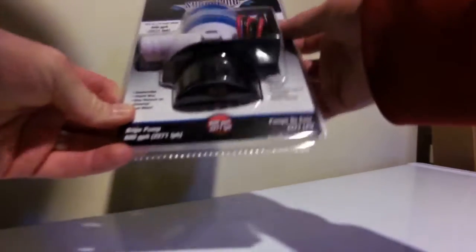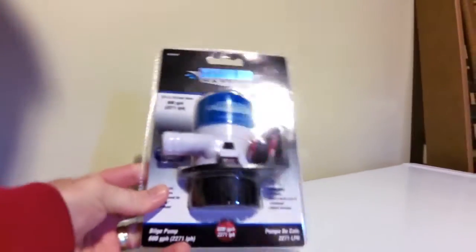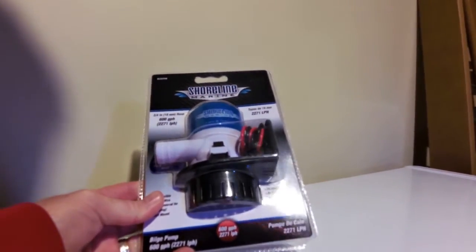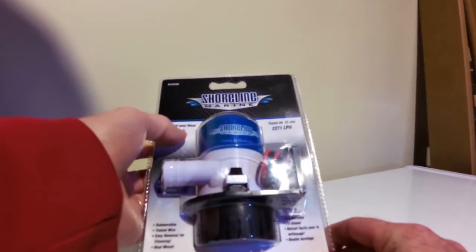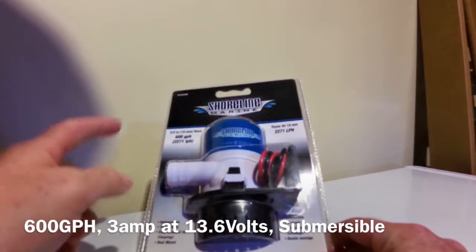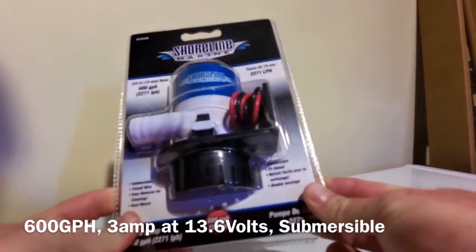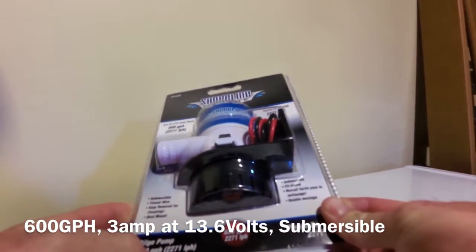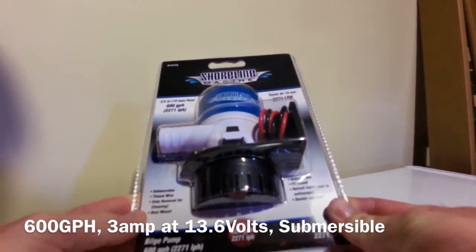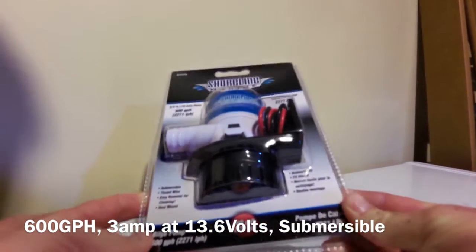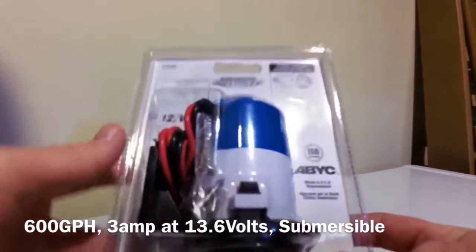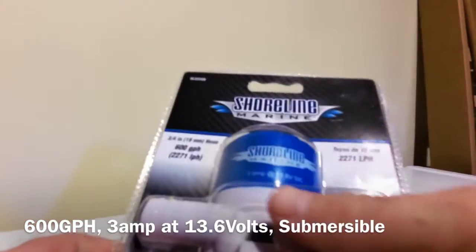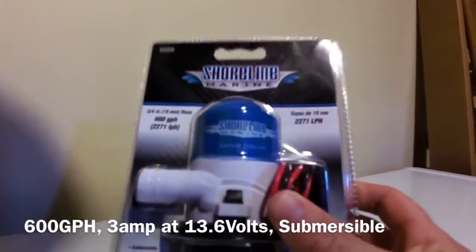This is a Shoreline Marine. This is a Canadian Tire special. It's a 600 gallon per hour pump and it is completely submersible. Submersible tinned wire, easy removal for cleaning, dual mount, 600 gallons per hour. Now the key information here is the voltage. This is a 12-volt pump.